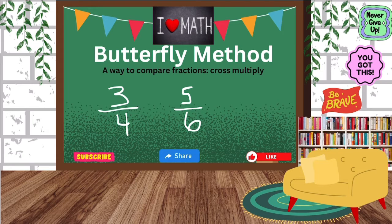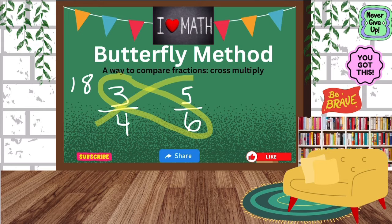That is what you call the butterfly method. So we're going to do three times six, and three times six is 18. I'm going to put the 18 on the side of the three because we started with the three. And then the next one, we're going to do the five times the four. And five times four is 20.